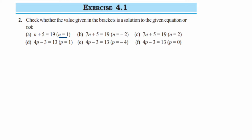Here is the second question from exercise 4.1, which is a simple equation. The question is to check whether the value given in brackets is a solution to the given equation or not. They have given different values like n=1 and n=-2 for respective equations. We need to substitute the value in the given equation — if LHS and RHS are equal, then it is a solution; if not, it is not a solution.